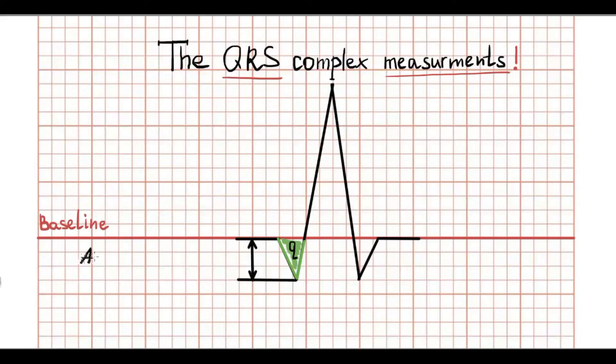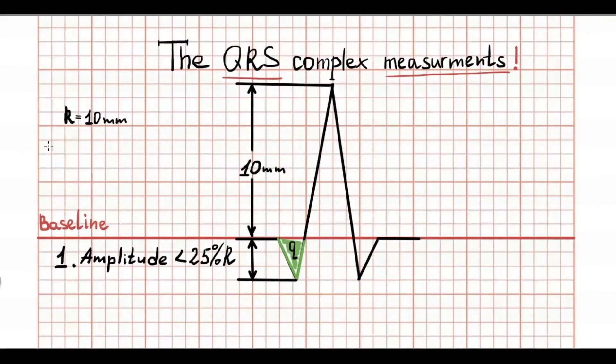Amplitude of Q wave should be less than 25% of R amplitude in the same lead. For example, if the R amplitude is 10 mm high, 25% from 10 mm is 2.5 mm. Therefore, Q wave in this lead should be less than 2.5 mm in amplitude.